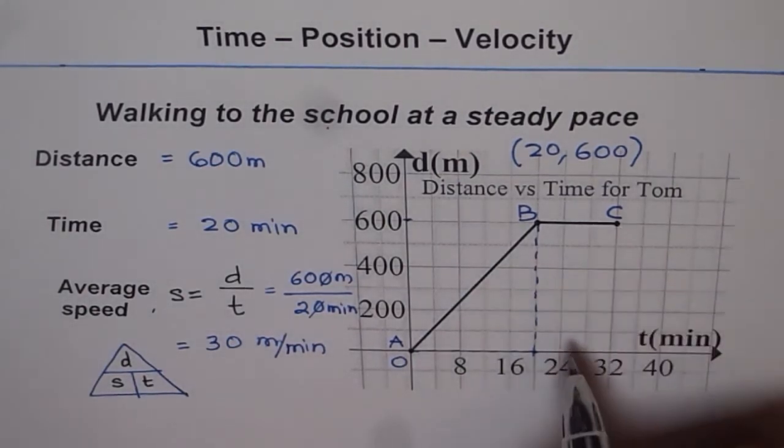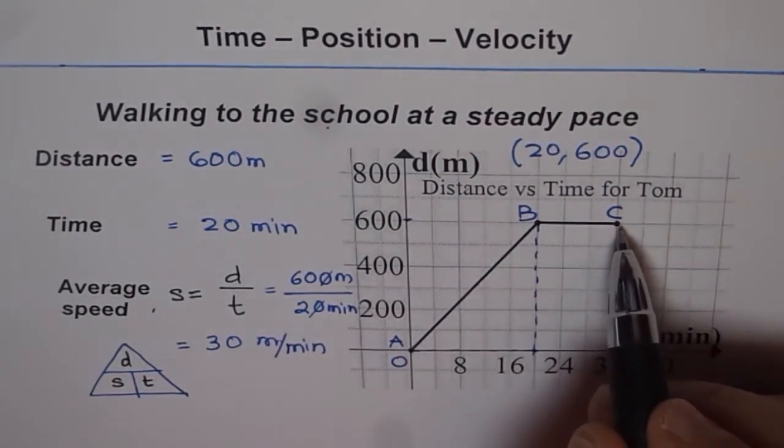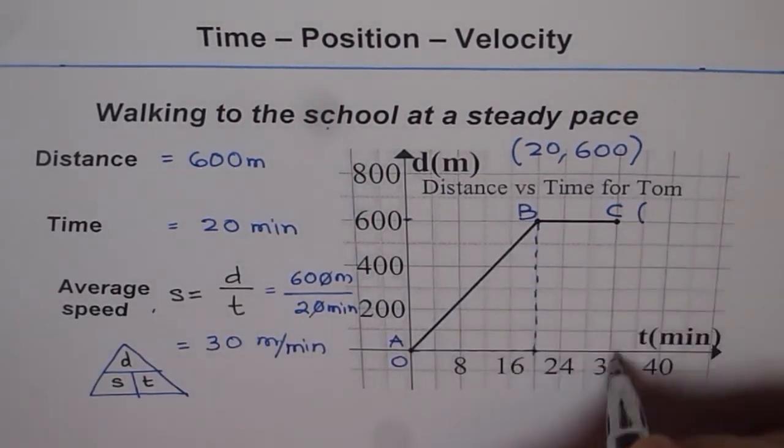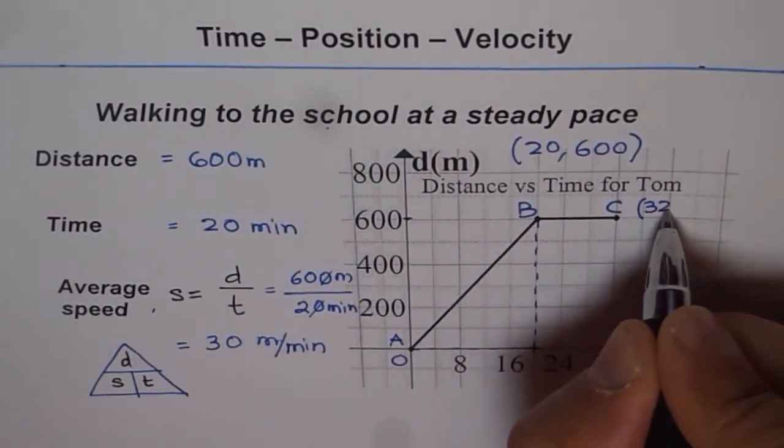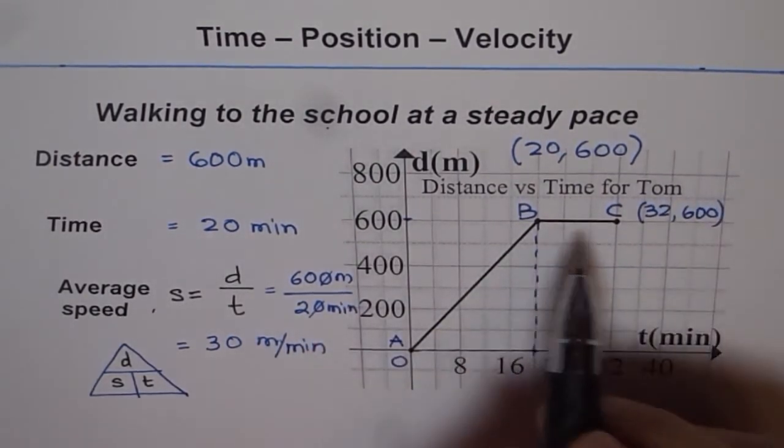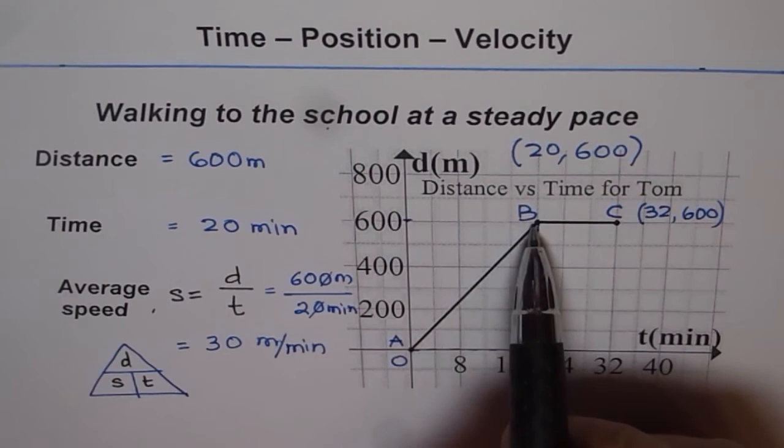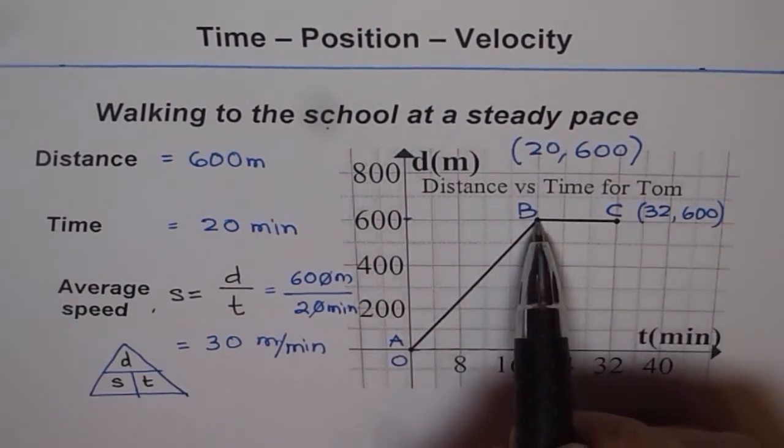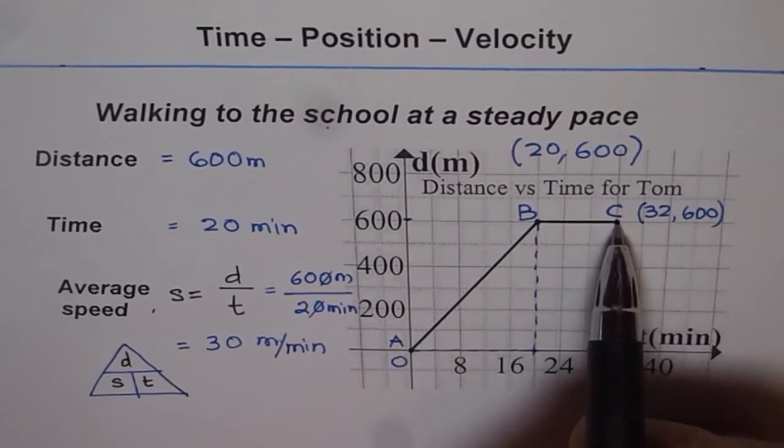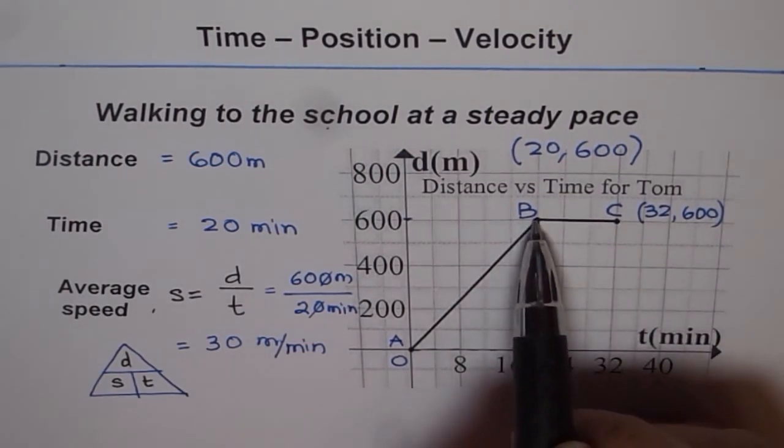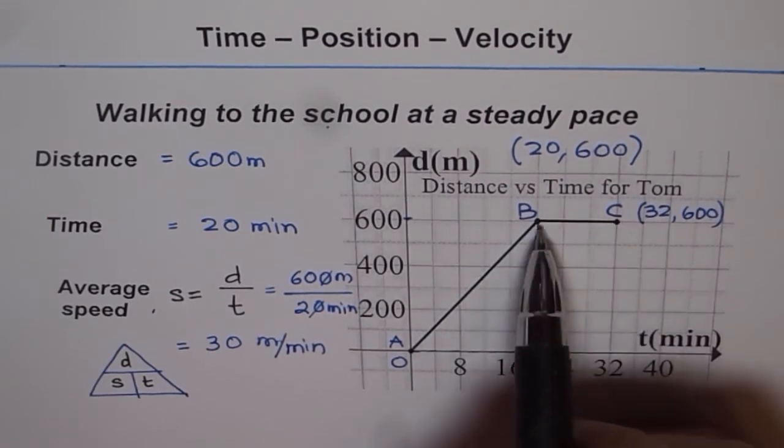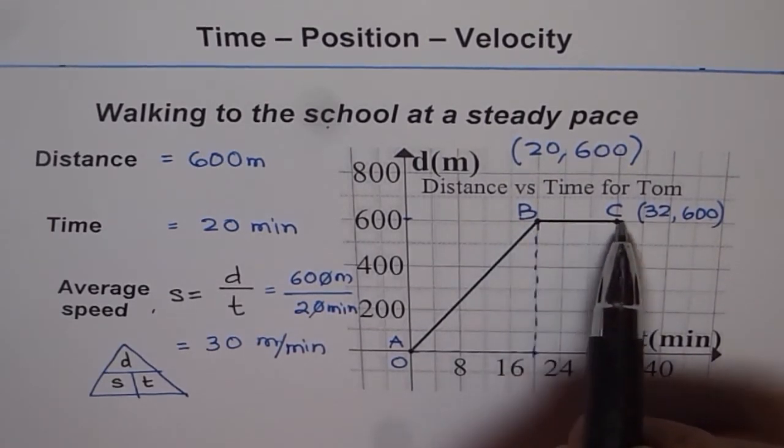Now, let's consider this point C. It indicates a position where the time is 32. So we will write time 32 and the distance is 600. Now you see, distance has not changed. So from B to C, distance remains 600. That means Tom was stationary. Tom was in the school.